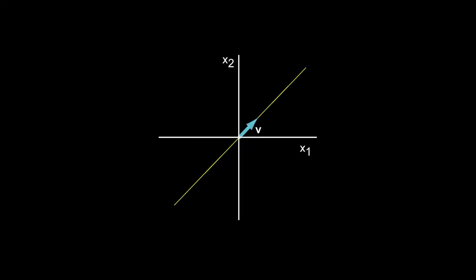Suppose v is an eigenvector of a 2 by 2 matrix. We can represent it as an arrow on a two-dimensional space. The yellow line is the span for this vector.